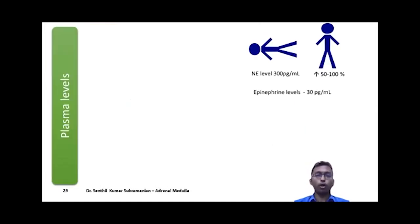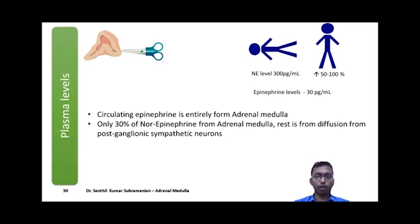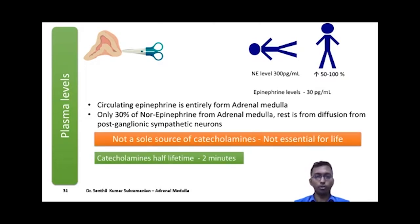The normal plasma levels of norepinephrine are 300 picogram per ml and epinephrine is 30 picogram per ml in the supine position. When standing, levels increase by 50–100%. After adrenalectomy, epinephrine levels fall drastically; however, norepinephrine shows little or no change, because only 30% of norepinephrine comes from the adrenal medulla — the rest is from postganglionic sympathetic neurons. Hence, the adrenal medulla is not the sole source of catecholamines and is not considered essential for life.